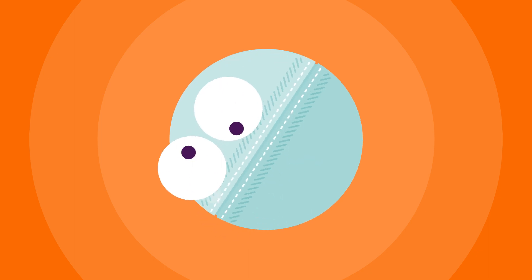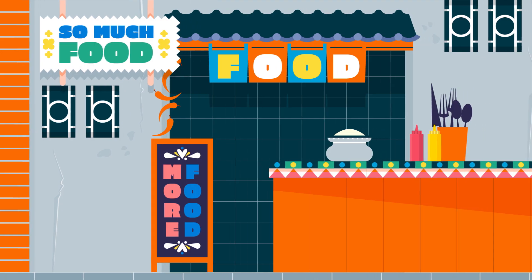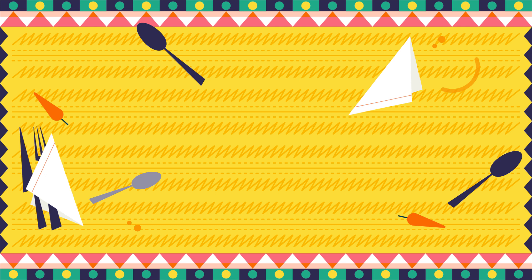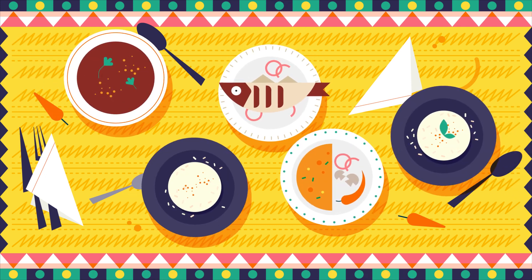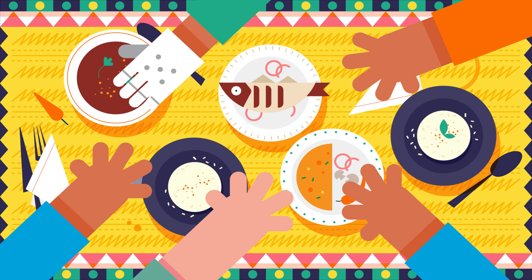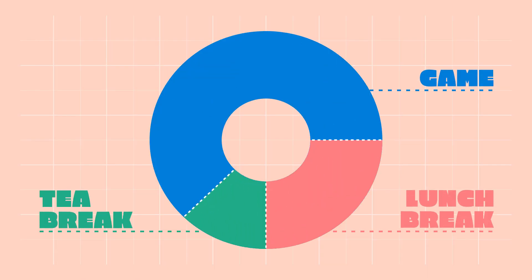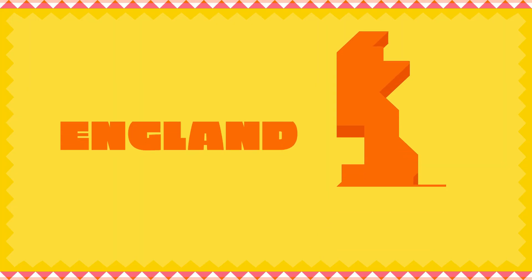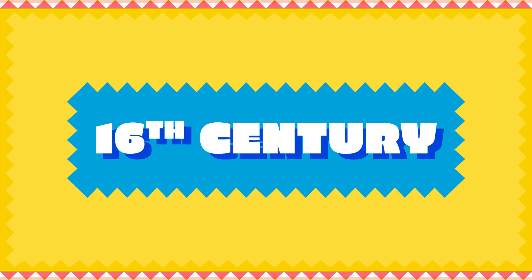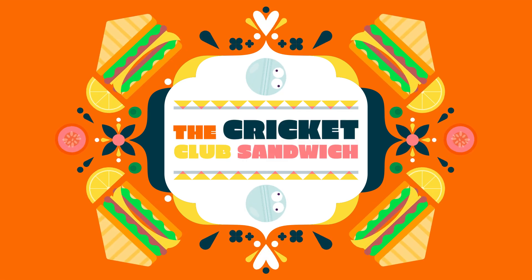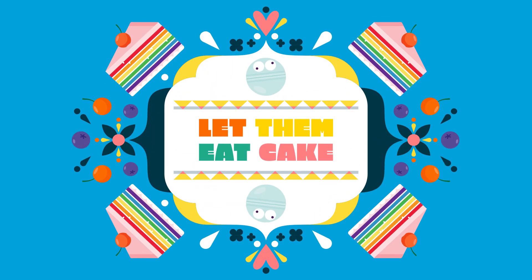Cricket is not a game for the faint-hearted, but it is known for its nice meals. Highly creative chefs have been known to make food for the teams — yes, the teams get to eat. There's a lunch break and an afternoon tea break during the game. In England, where the game was first played in villages in the 16th century, cricket is also the art of the sandwich and of the cake.